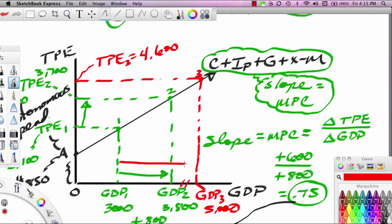If the GDP were to expand from 3,000 to 5,000, TPE would increase from 3,100 all the way up to 4,600. Notice that's an increase of 2,000 in terms of GDP. And that's an increase of 1,500 in terms of TPE. Notice that the rise, the red rise, is 1,500. The run is 2,000. And that turns out to be a slope of 0.75, which is what we would expect.